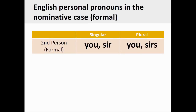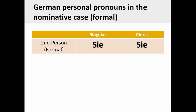English generally does not have a formal form of address, although it can be approximated by adding 'sir' or 'ma'am' to the second person singular and plural personal pronouns, as you see on the screen. It is important to note, however, that German has a formal form of address that uses specific personal pronouns. These are Sie (second person singular formal) and Sie (second person plural formal). These formal personal pronouns are always capitalized.